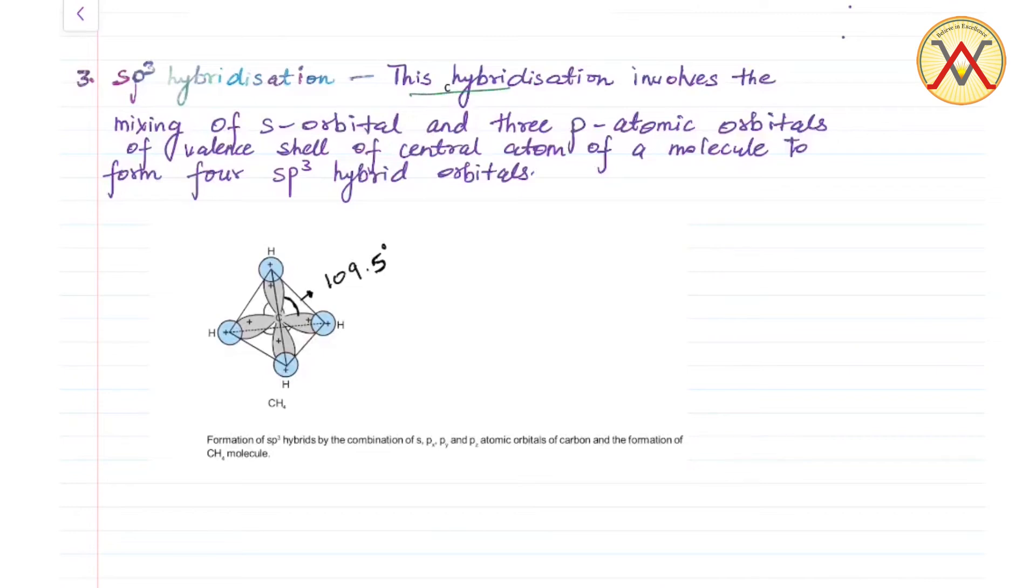Next is sp3 hybridization. This hybridization involves the mixing of s orbital and three p atomic orbitals of valence shell of central atom of a molecule to form four sp3 hybrid orbitals.